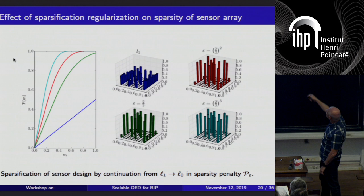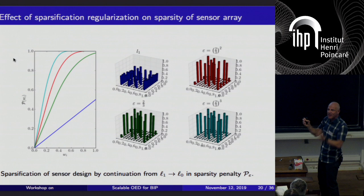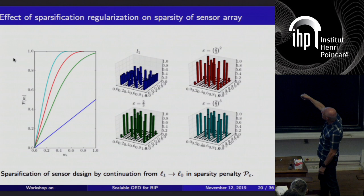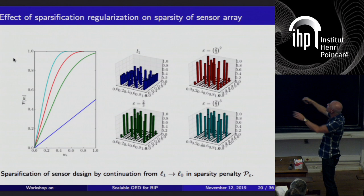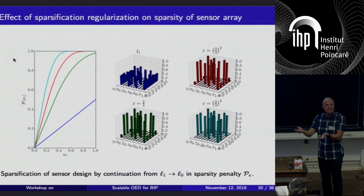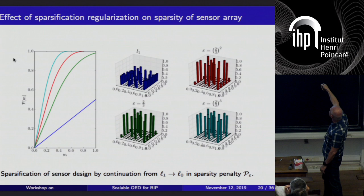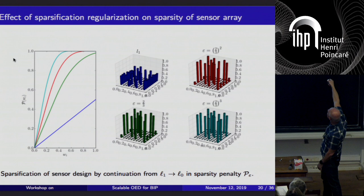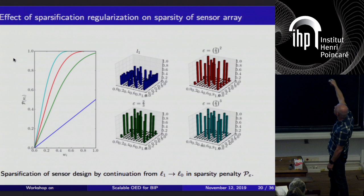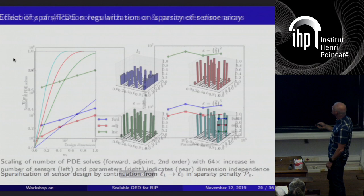This is the effect of the sparsifying penalties. Starting from L1 and following the continuation — blue to green to red to turquoise — as we approach L0, the sensors become increasingly sparse. L1 alone promotes sparsity but doesn't guarantee it; the whole point of compressive sensing is that under certain properties L1 is equivalent to L0, but we don't have those properties here. Following the continuation where epsilon controls how much you move toward L0, you get an increasingly sparser set of sensors, and finally for a certain choice you get weights essentially all one or zero.